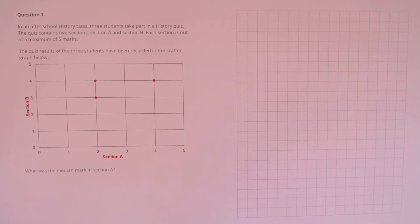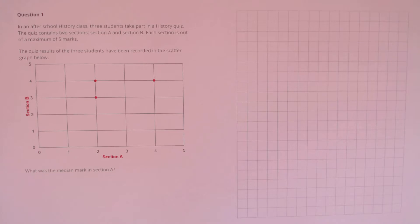Question 1. In an after-school history class, three students take part in a history quiz. The quiz contains two sections, section A and section B. Each section is out of a maximum of five marks. The quiz results of the three students have been recorded in the scattergraph below. What was the median mark in section A?